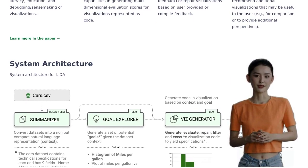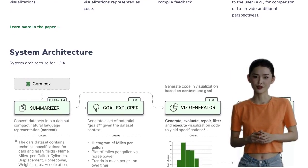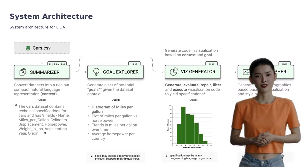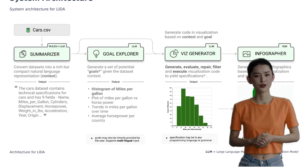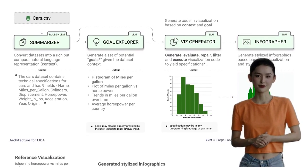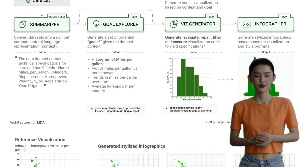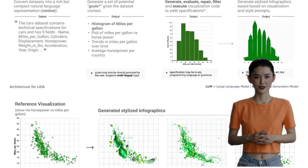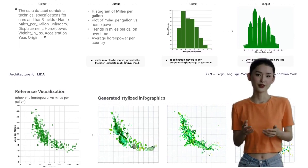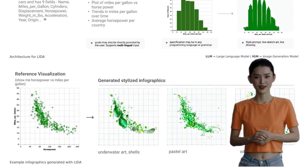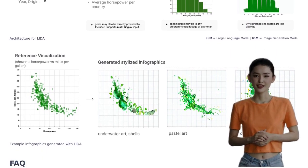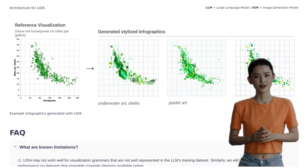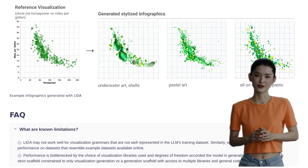It's all about finding the right balance between visual appeal and conveying the message effectively. There are also concerns about plagiarism and intellectual property issues. It's crucial to respect copyright laws and ensure that the content generated by LIDA is original and properly attributed. Some users have commented on the quality of the code and the need for voice commands — valuable suggestions that can enhance the user experience. Lastly, there are concerns about trusting the output of a black box system, but LIDA's transparency and user interface aim to provide users with a clear understanding of how the tool works.